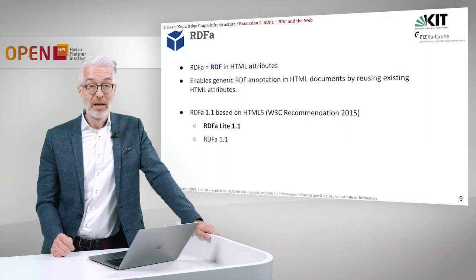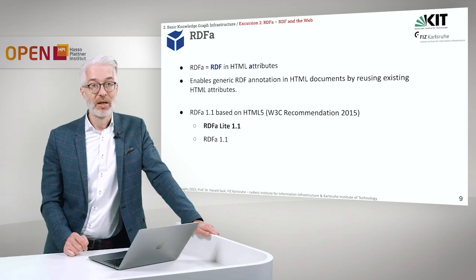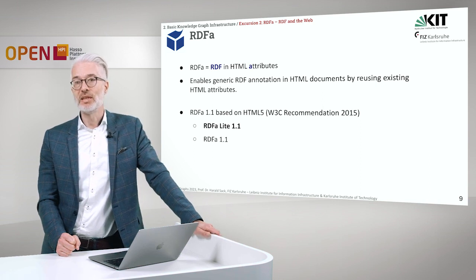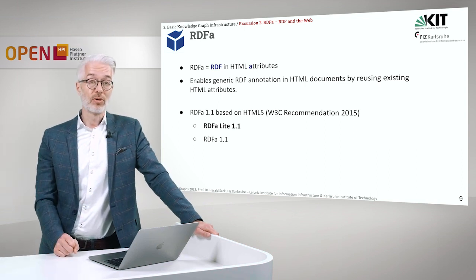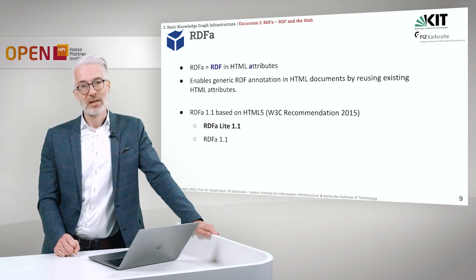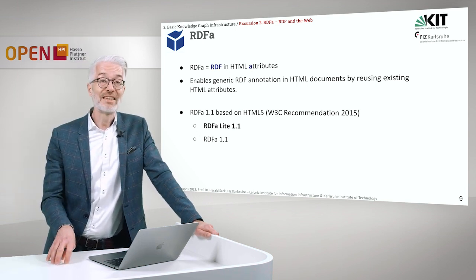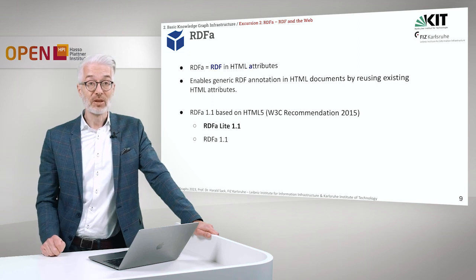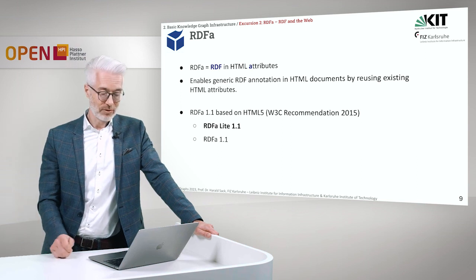So what is RDF-A? RDF-A is RDF in HTML Attributes — that is where the 'A' comes from. It enables the inclusion of generic RDF annotations in HTML documents by reusing existing HTML attributes, just as we saw with microformats. We are now talking about RDF-A 1.1, which is based on HTML5 and became a W3C recommendation in 2015. We won't go into the entire RDF-A 1.1 full standard — we only look at the light standard. If you are interested, refer to the reference documents included at the end of this presentation.